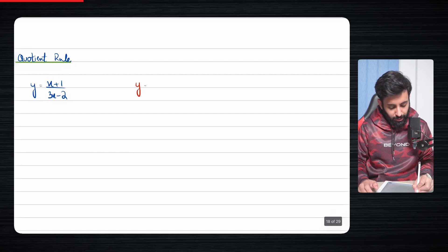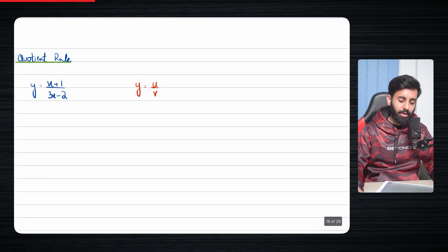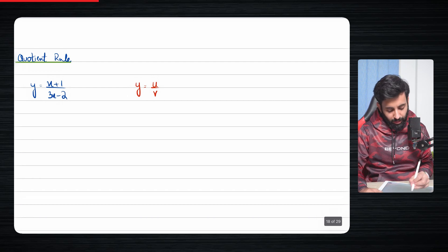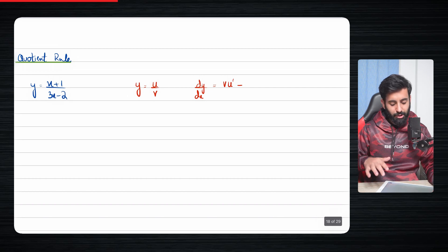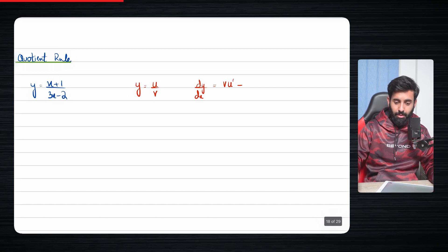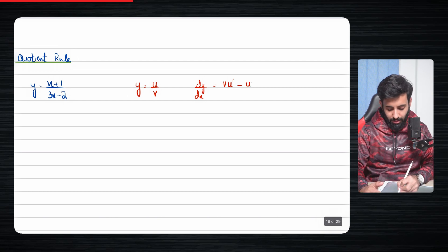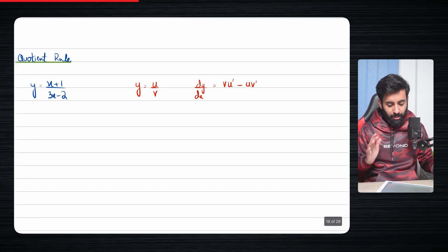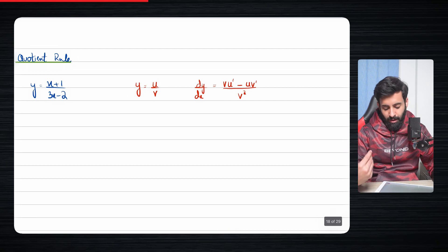Quotient rule looks like u upon v, where the expression in the numerator is u and the expression in the denominator is v. So dy by dx looks like this: v u prime minus u v prime. Remember from product rule it's v u prime plus u v prime, but in quotient rule it's minus. So if you mess up the order in quotient rule, you don't get away with it because of that minus sign. It's v u prime minus u v prime, all over v squared.